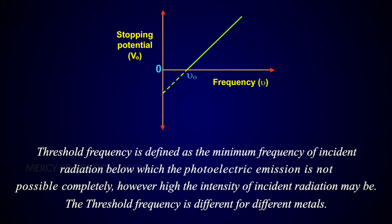Therefore, threshold frequency is defined as the minimum frequency of incident radiation below which the photoelectric emission is not possible completely, however high the intensity of incident radiation may be. The threshold frequency is different for different metals.